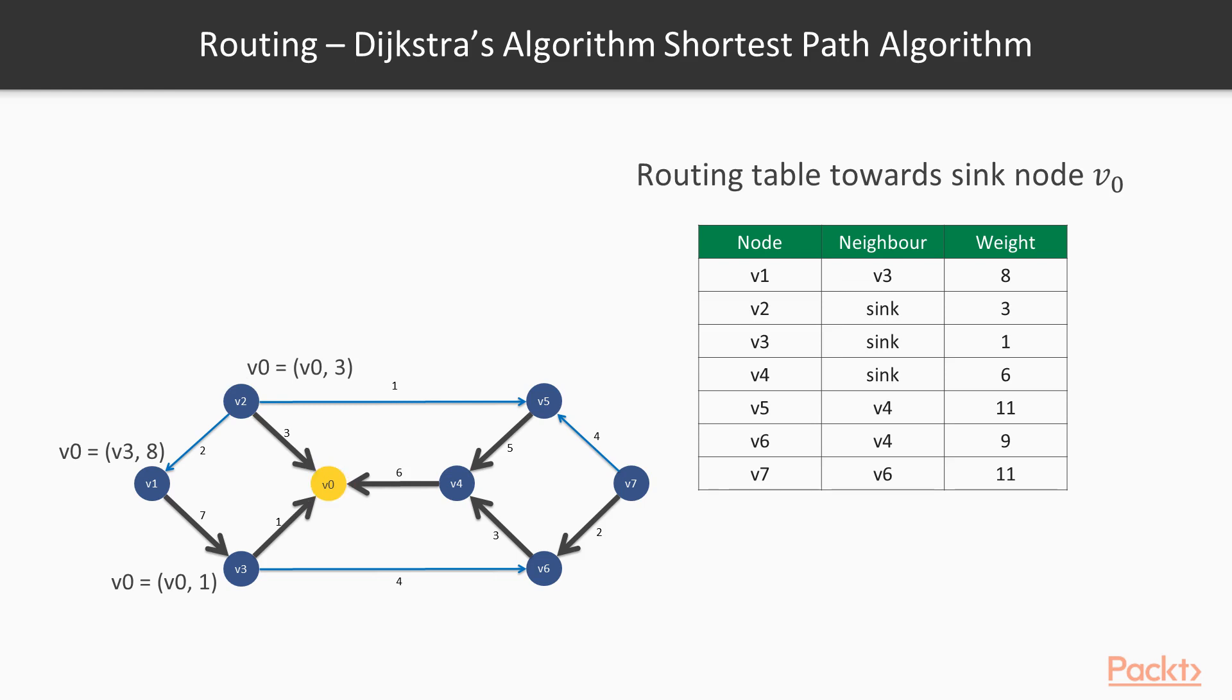If the same message arrived at v1 instead of v2, v1 routing table will tell it to forward this message to v3. When it reaches v3, it will forward this message to its neighbor, which again is our destination node v0. And finally, m reaches its destination with the shortest path.